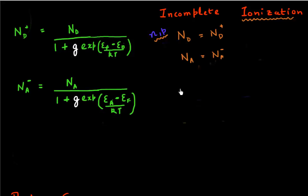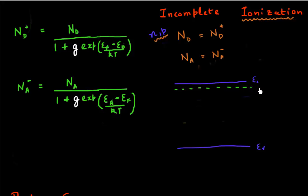So let's start with our good old friend, the band diagram of a semiconductor. I'll draw the conduction band and valence band. I'll also draw, using a green dotted line, the energy level representative of where my donor atoms are. Then I'll also have a Fermi energy, drawn using a yellow dotted line, which is used to calculate the number of electrons and holes. Donor atoms, like most other things in semiconductors, obey Fermi-Dirac statistics as well.